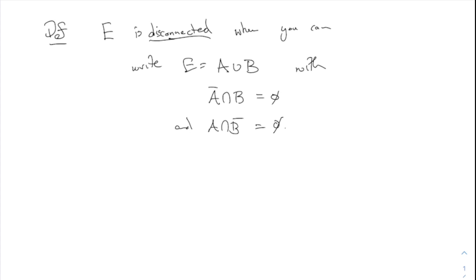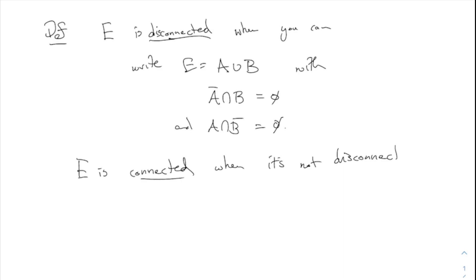If you can do that, those sets A and B form what's called a separation of E — you're expressing E as two separate parts. E is disconnected when there is such a separation, and connected when it's not disconnected, meaning it's impossible to make that kind of separation.